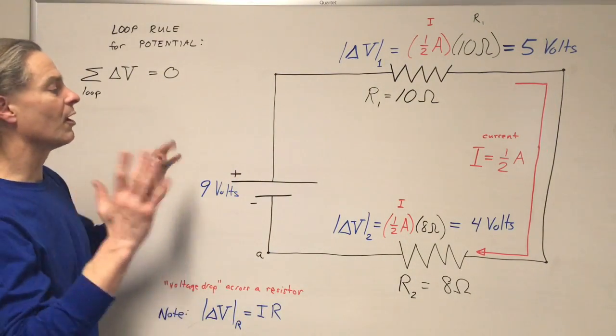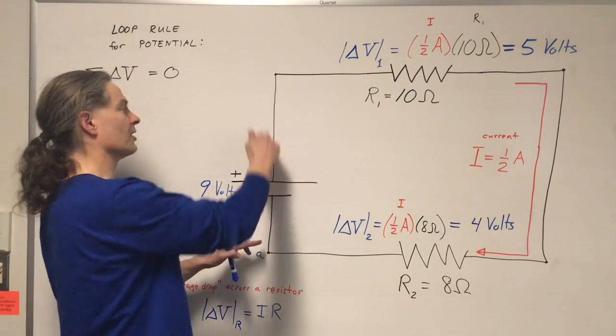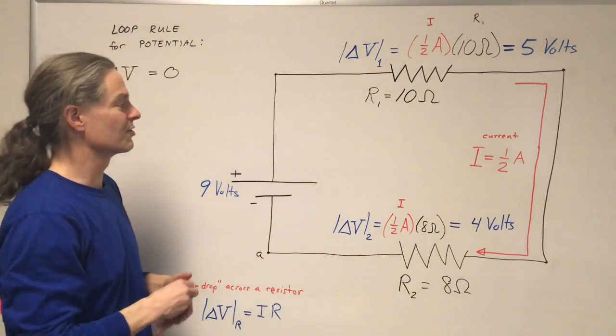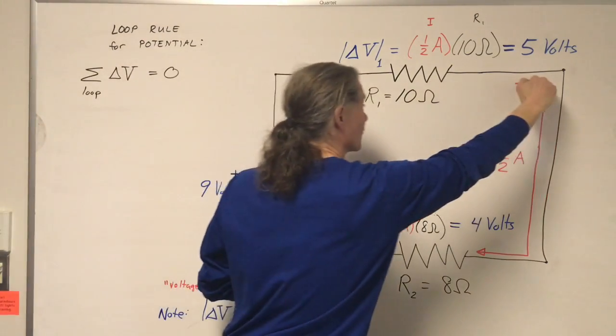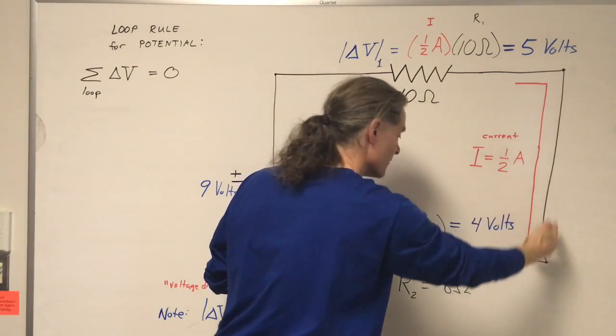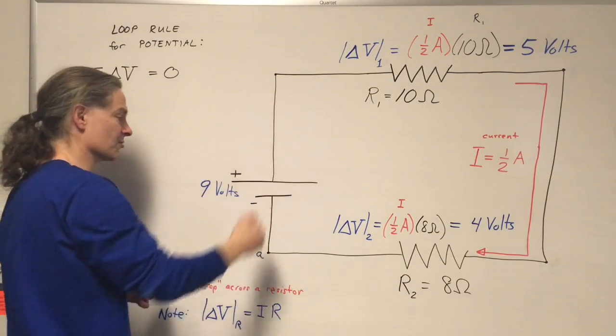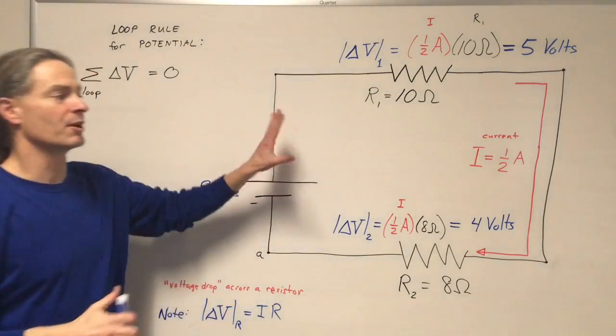Let's say we've already found the electric current. We know from the junction rule that the electric current has to be the same everywhere in the circuit because there's no place for the current to split. It turns out we have a half an amp of current passing through this resistor, half an amp passing through this resistor, and half an amp passing through the battery in this direction.